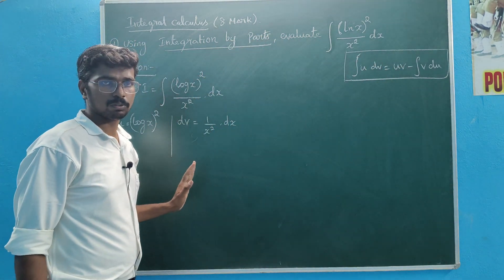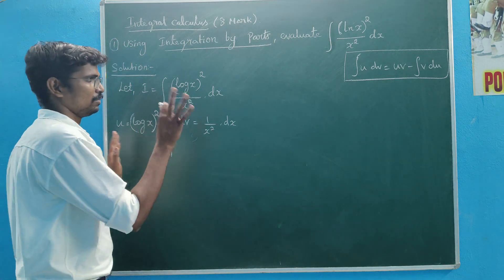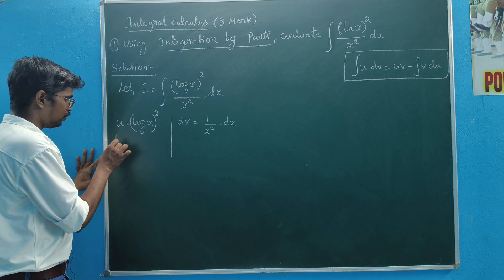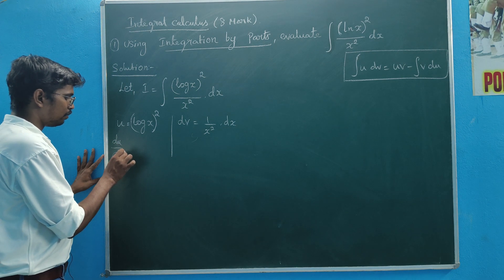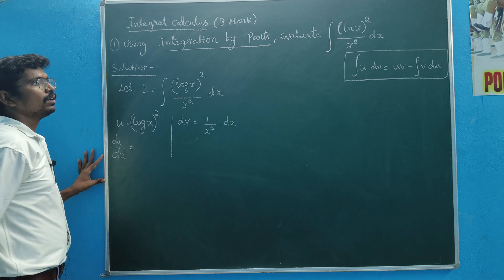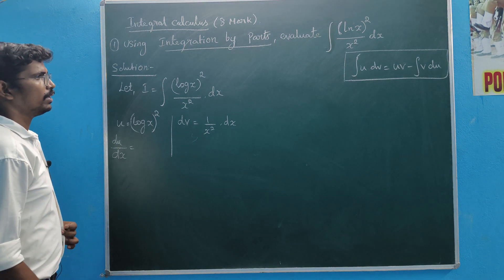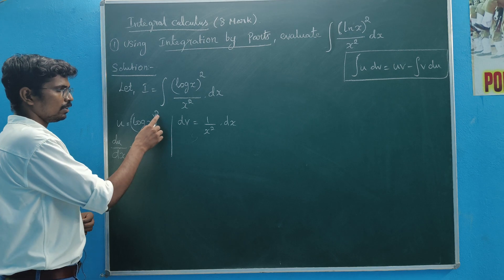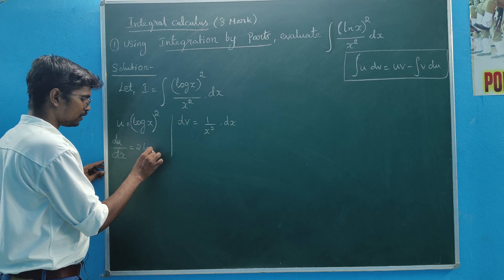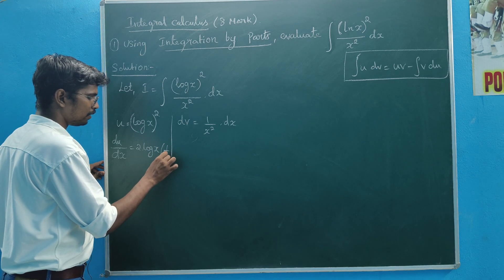We have to do the parts — integration by parts. We set u, then find du/dx. There are two or three points here: 2 log x whole square times x, and the integral of 1 by x.